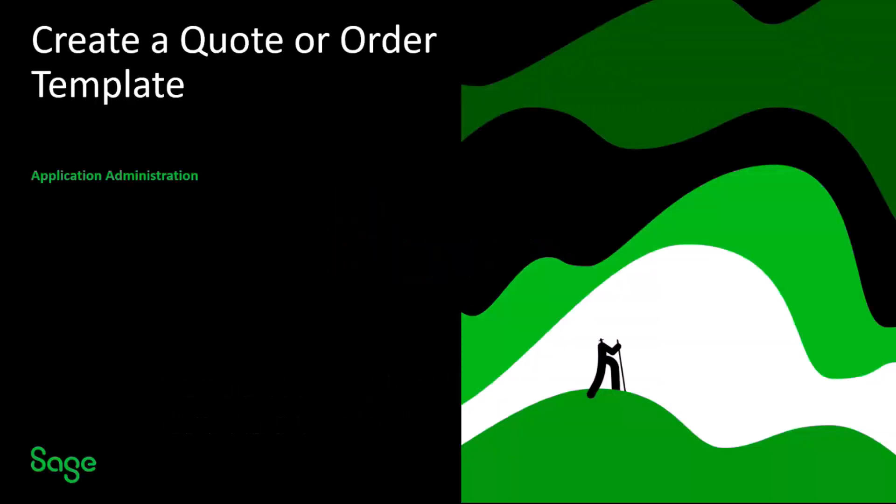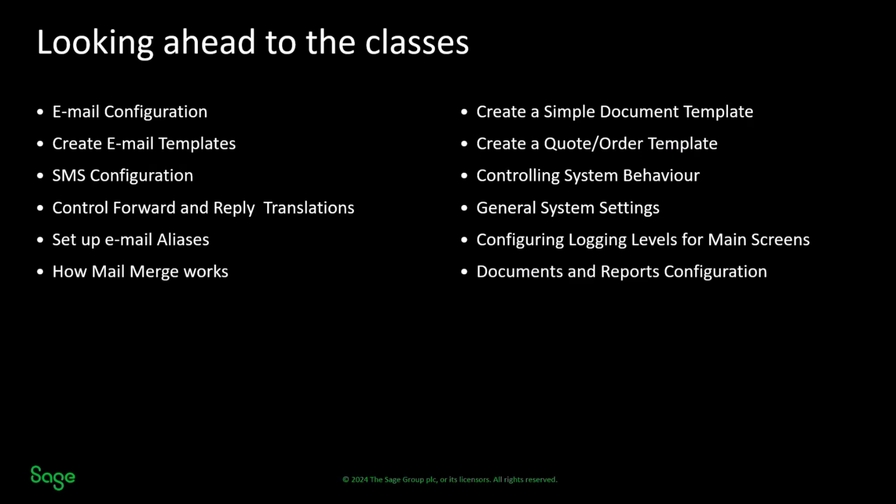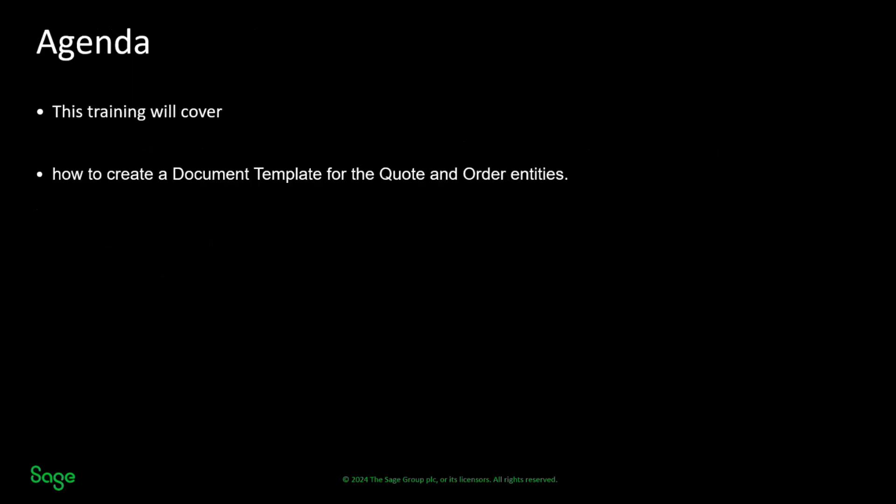Today we're going to be looking at the continuation of how to create document merge templates. We're going to be looking at the creation of quote or order templates — that's when we're carrying out a merge in the context of an opportunity quote and an opportunity order. If you need to revise any of the concepts, those are already up on the YouTube channel. Today we're focusing on the creation of a document template around quote and order entities.